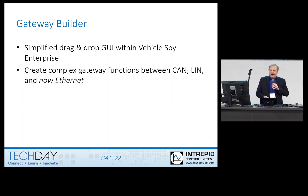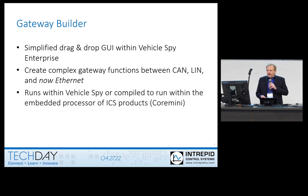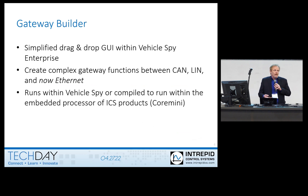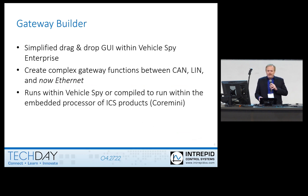Now you can create complex gateways between CAN, LIN, and Ethernet. It runs within Vehicle Spy when you're hosting one of our pieces of hardware, or you can compile it to run embedded, standalone in the embedded processor of the device — so it can be standalone in a car or a bench in a server gateway function without a host computer connected.